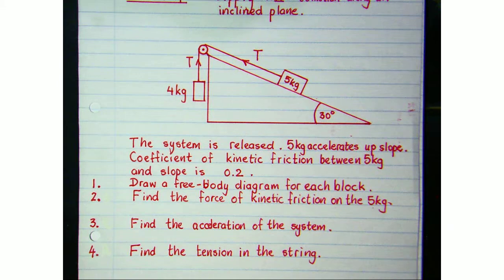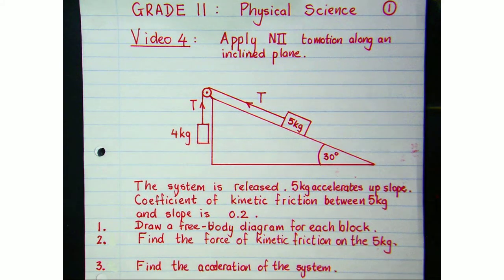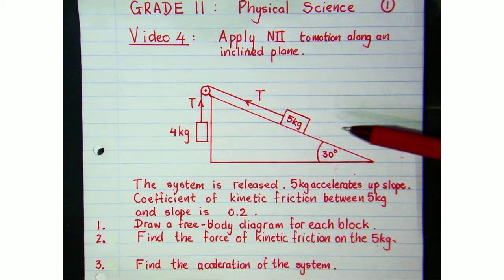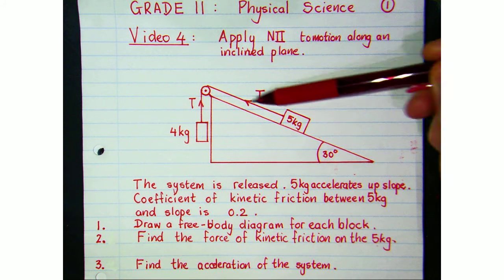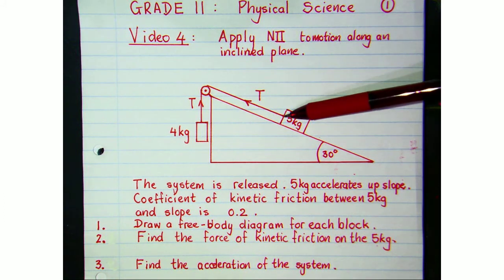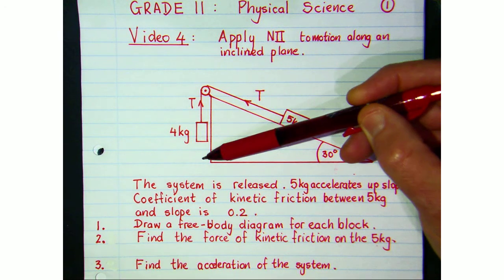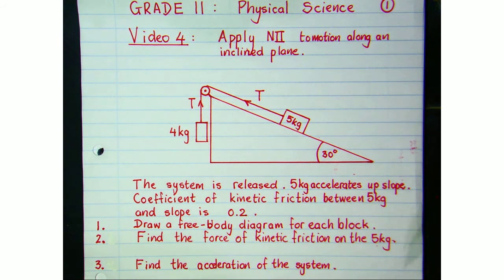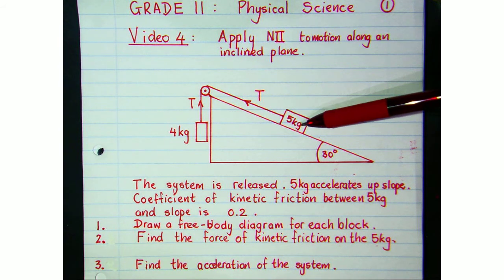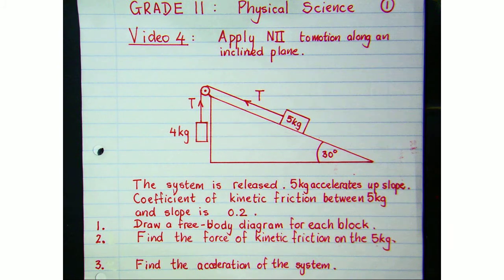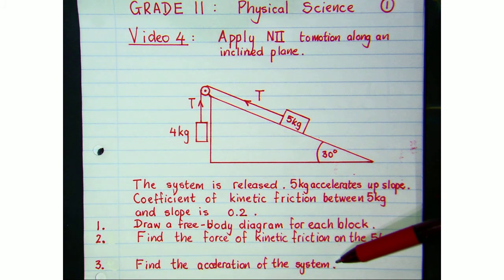Now for question 3: find the acceleration of the system. Because the string doesn't stretch, the acceleration of the 5 kg up the slope equals the acceleration of the 4 kg downward. Pause the video and have a go at finding the acceleration of the system.